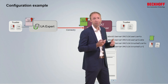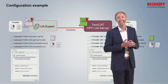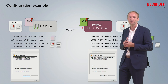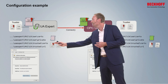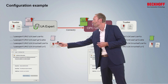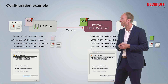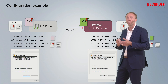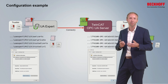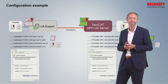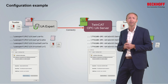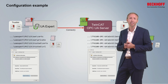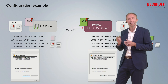On the UA Expert side, the configuration is identical — there is a folder for the public key, the private key, and the trust relationship for the certificate authority. Whenever UA Expert now connects to the TwinCAT OPC UA server, the trust relationship is automatically handled and established via this mechanism.